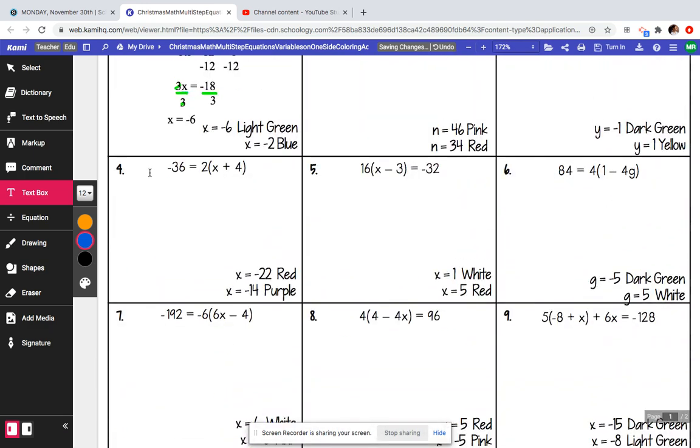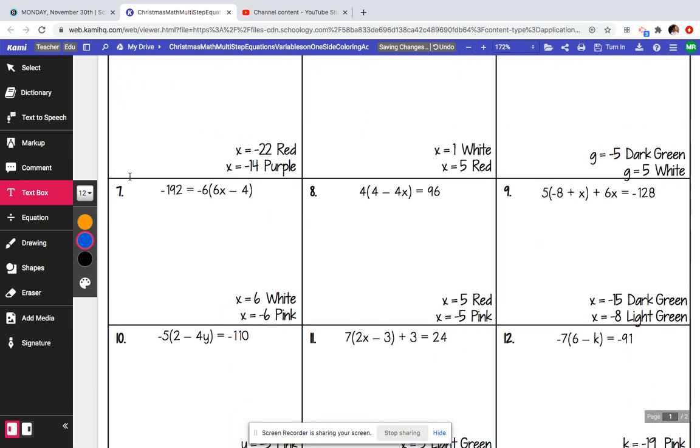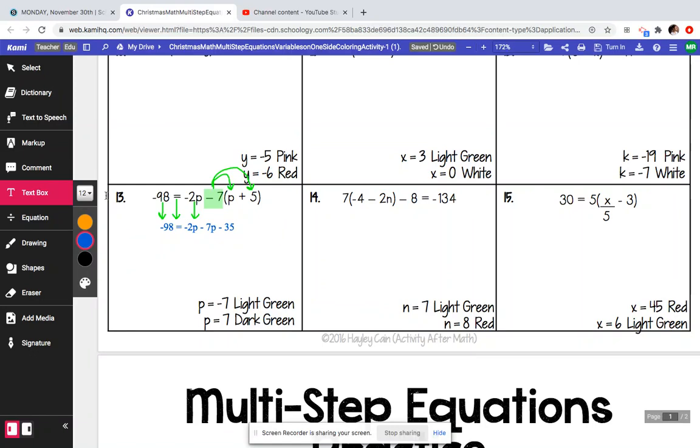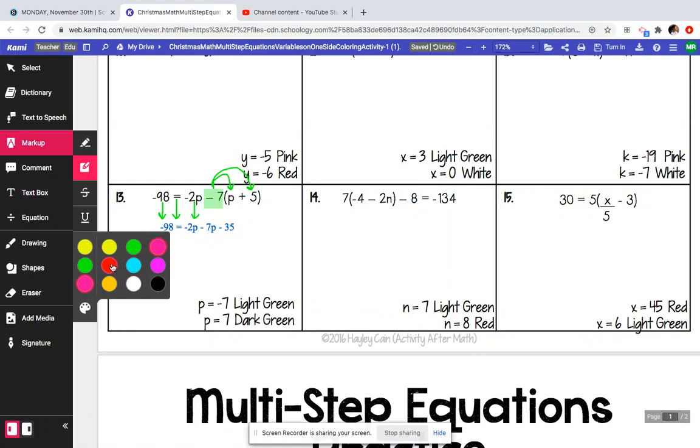Step 2, if you can scroll up, step 2 is we're going to combine like terms. And I personally love, and I try to tell my students to do this as well, but I love highlighting my like terms. So numbers are like terms. So negative 98 and negative 35 are like terms. And we also have our variables, our coefficients here. So negative 2p are like terms and negative 7p are like terms.